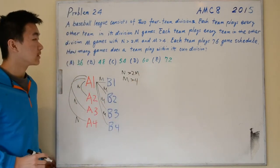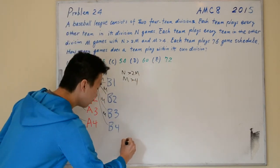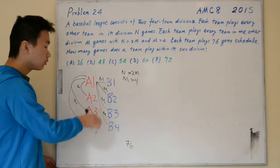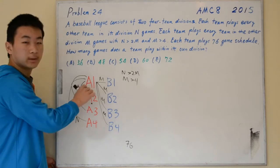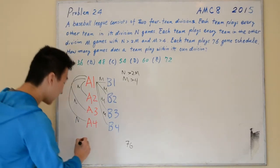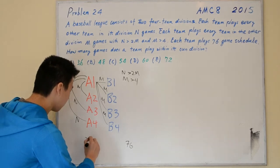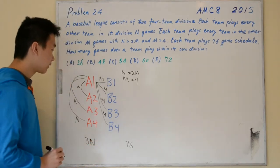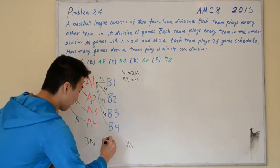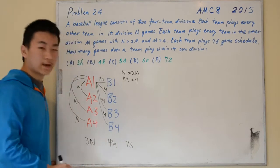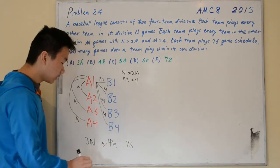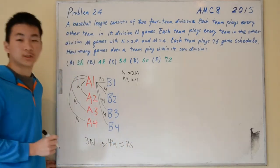We know that each team plays a 76-game schedule. So the total number of games that A1 plays will be 76. Within its own division, it plays 3N games, and against the other division it will play 4M games. Together this forms the total, so 3N plus 4M should equal 76.